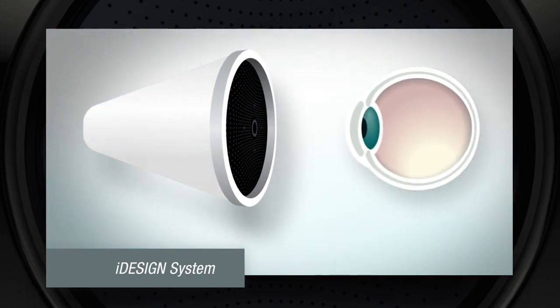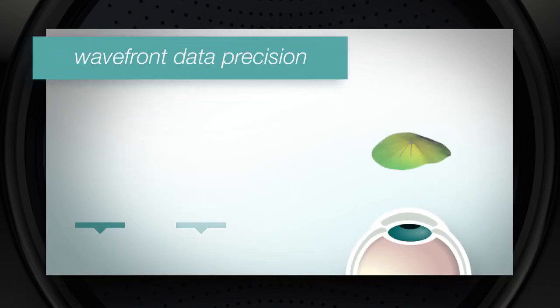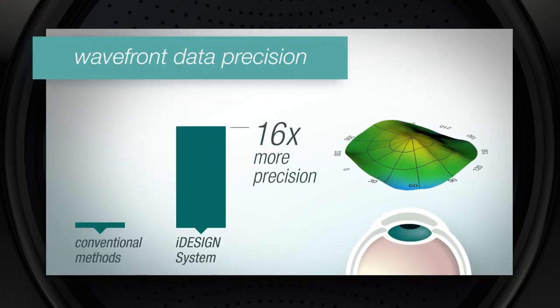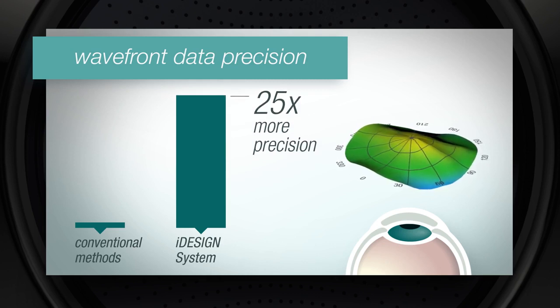Light reflects off the retina and is captured by the system's special sensors. This wavefront data is then analyzed and displayed with 25 times more precision than conventional methods to determine the amount of a patient's refractive error.